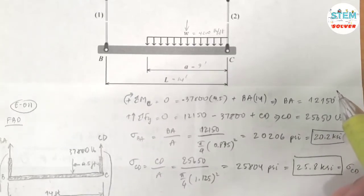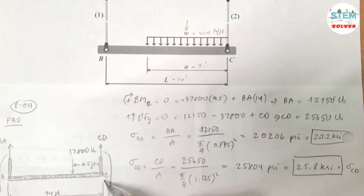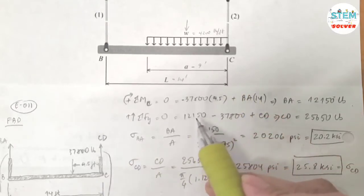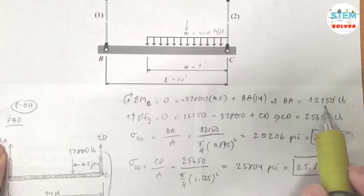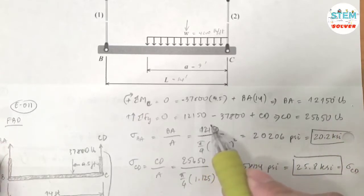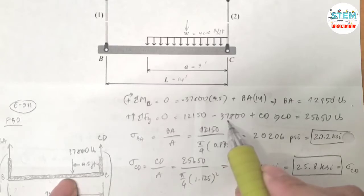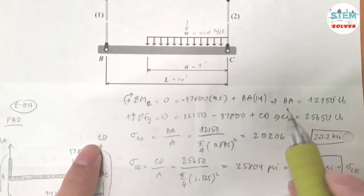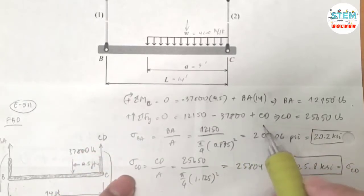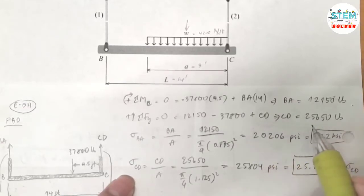Now let's take the summation about the y-axis direction. So I have BA which is 12,150 pounds, minus, because it's a downward force, minus 37,800, plus CD equals 0. Then solve for CD, I got 25,650 pounds.